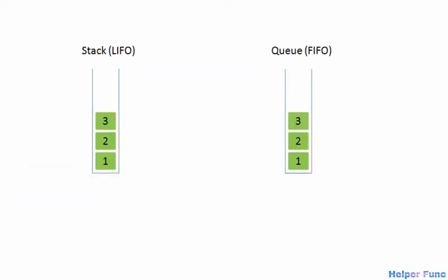Stack works on a LIFO model, that is last in first out. If I need to push an element into the stack it will be pushed at the top, and if I need to pop the element it will be popped from the top — whichever element was pushed last will be popped first. But queues work on a FIFO model, that is first in first out. If I push an element it goes to the back, but popping removes from the front — whichever element was pushed first will be popped first.